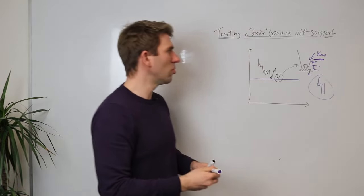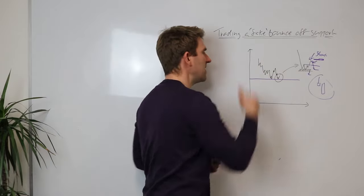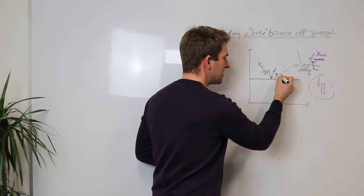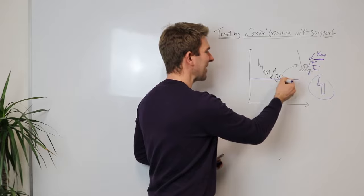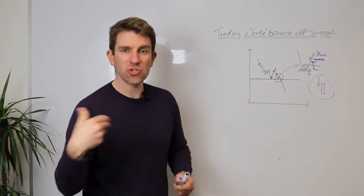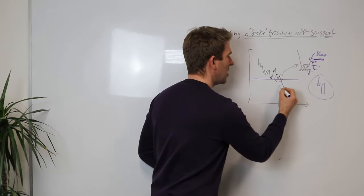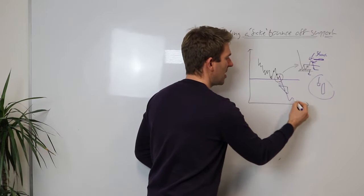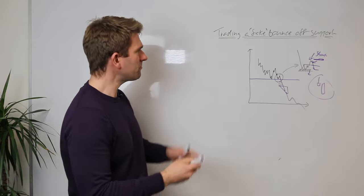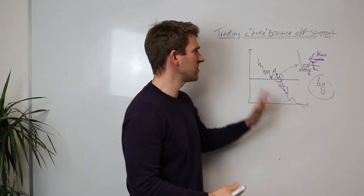You could take some off the prior support. But the main idea is it's a fake bounce off support. And the thesis is it's going to then rip through. And the cascade of sellers, all the stops getting triggered, is going to help you get out of the market. And then you're kind of scaling out into that low, maybe keeping a chunk of the trade for some future moves. So that's trading a fake bounce off support.